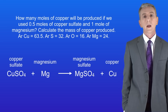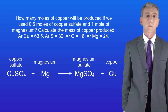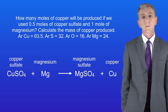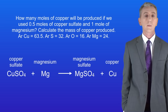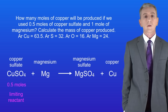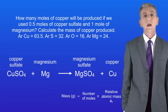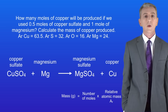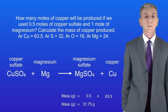Here's one more question for you. How many moles of copper will be produced if we use 0.5 moles of copper sulfate and one mole of magnesium? Calculate the mass of copper produced. Pause the video again and try this yourself. The equation tells us that one mole of copper sulfate reacts with one mole of magnesium to make one mole of copper. We have 0.5 moles of copper sulfate, which means that we can make 0.5 moles of copper. To find the mass we multiply the number of moles of copper by the relative atomic mass: 0.5 multiplied by 63.5 gives us a final mass of 31.75 grams.